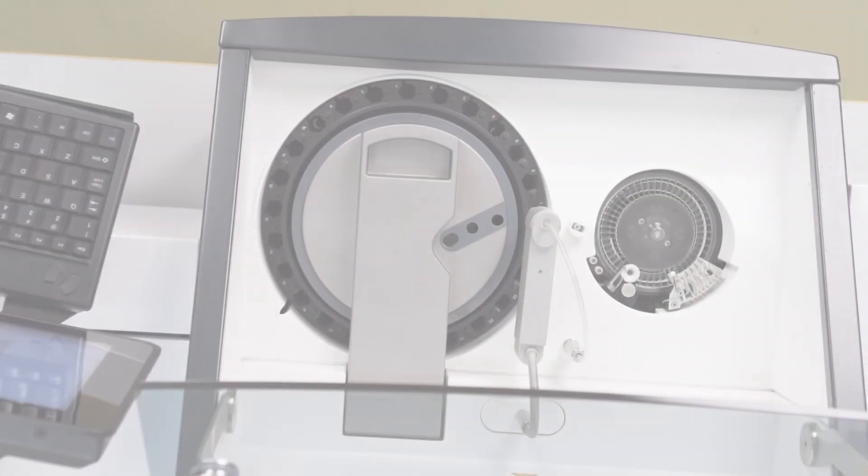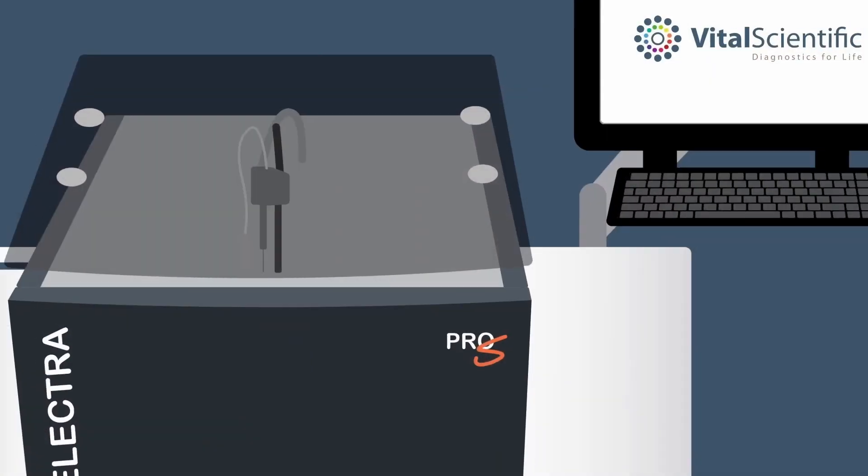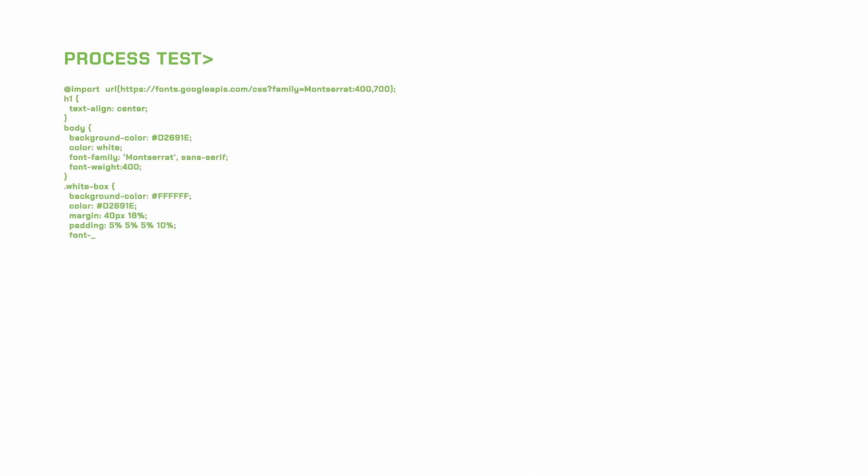In the fully automated operation, the operator simply loads barcoded samples on the rotor, touches process test, and walks away. The Selectra Pro-S will scan the sample IDs automatically, perform the program tests, and check the results against lab criteria.